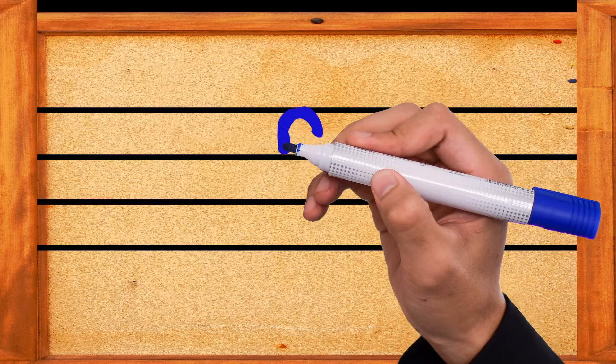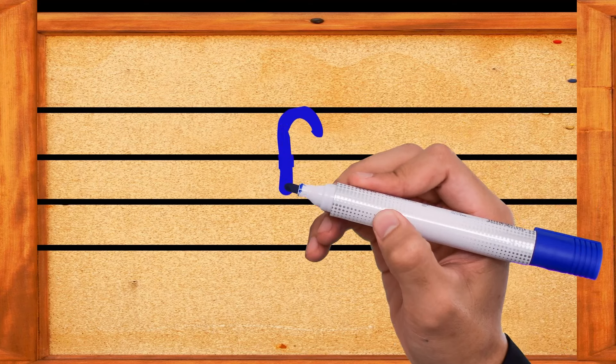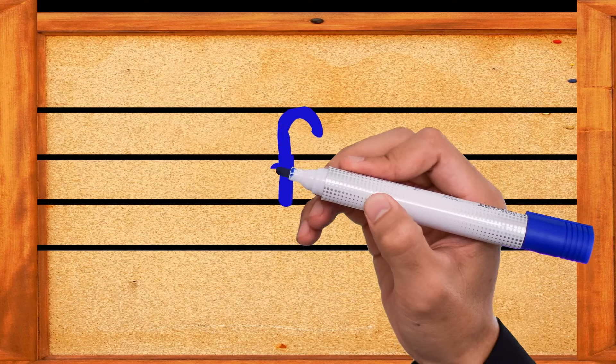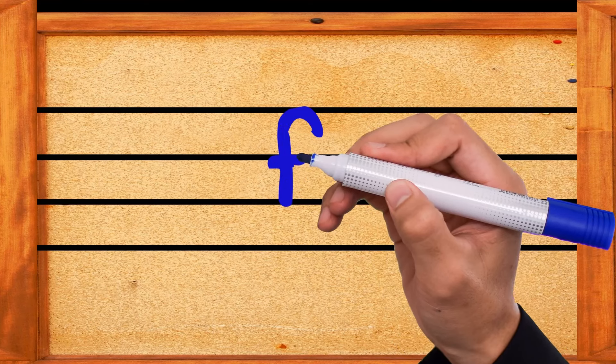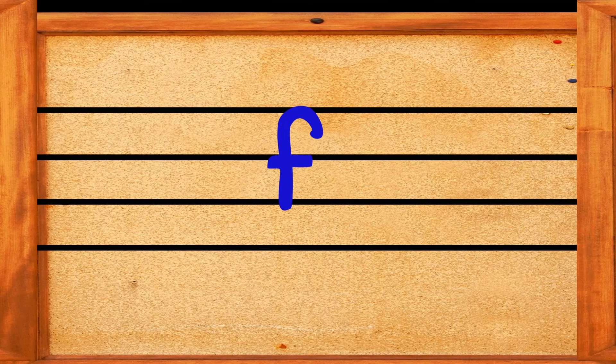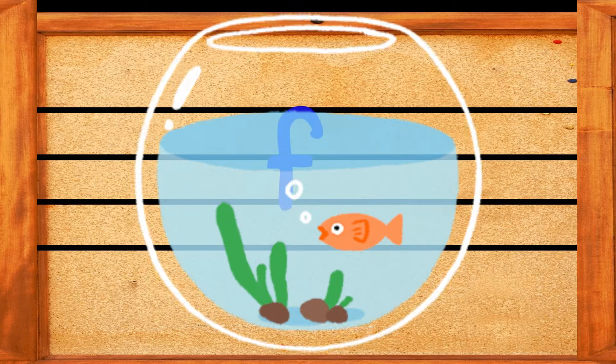Make a small curve, then go down and down, then make a small line. This is the letter F. F is for fish.